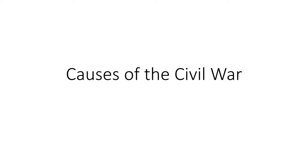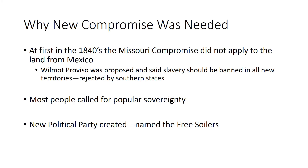As issues such as states' rights and slavery plagued our nation, we will now begin talking about the causes of the Civil War. After the Mexican-American War, it was clear that a new compromise would be needed to figure out what states would become slave or free. At first in the 1840s, the Missouri Compromise did not apply to the land from Mexico.